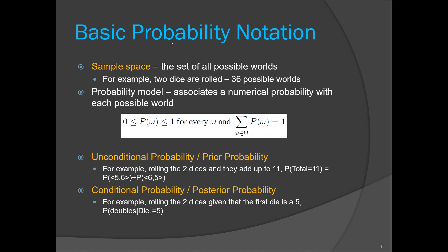We studied different probability notations, starting with the sample space — the set of all possible worlds — where the summation of probabilities of all possible worlds sums to one. Then we covered two types of probability: prior probability and posterior probability, also known as conditional probability. Conditional probability is the probability of one event given that another event has already occurred, denoted as P(A|B).